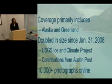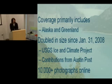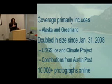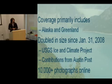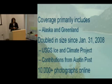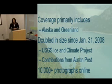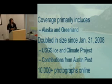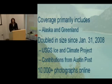We have a Glacier Photograph Collection where we have glaciers extending back to the 1880s up to 2005. This is a really neat collection because it was donated to NSIDC by William Field back in the 1970s. Coverage primarily includes Alaskan and Greenland glaciers, although we do have limited coverage in other areas such as Canada, Europe, New Zealand, and Peru. This dataset is one of our most popular at NSIDC. It's doubled in size since January 2008 with many contributions by the USGS Ice and Climate Project, and we now have over 10,000 glacier photographs online.